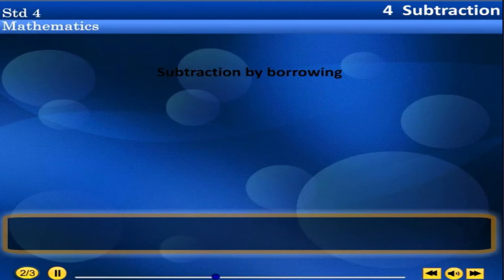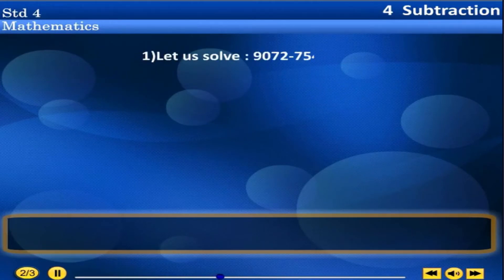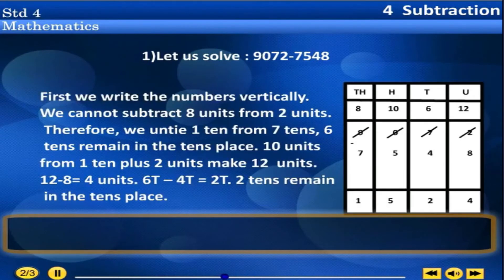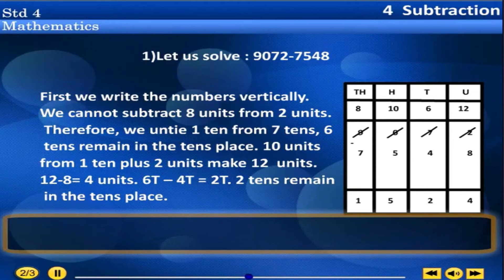Subtraction by borrowing. Problem 1: Let us solve 9072 minus 7548. First we write the numbers vertically. We cannot subtract 8 units from 2 units. Therefore, we untie 1 ten from 7 tens — 6 tens remain in the tens place. 10 units plus 2 units make 12 units. 12 minus 8 is equal to 4 units.